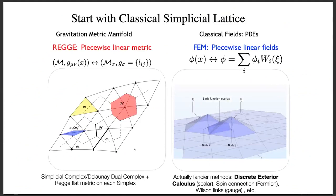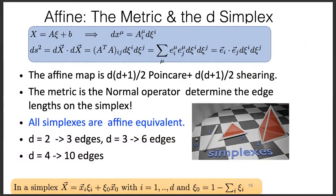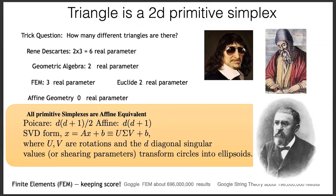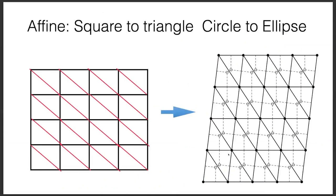What does this have to do with the affine transformation? I take a square lattice and can transform it into a triangular lattice — and if I tilt it enough I can make regular triangles. So the square lattice and the regular triangular lattice are two endpoints of a stretching transformation. The technical word for that stretching is called an affine transformation.